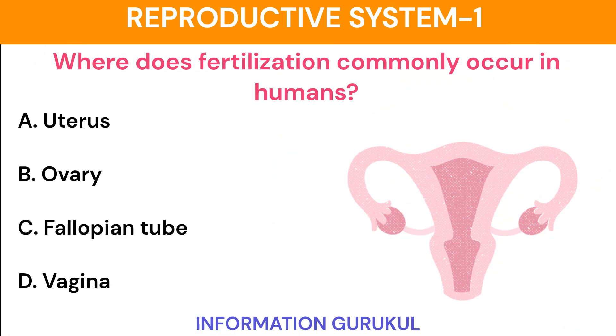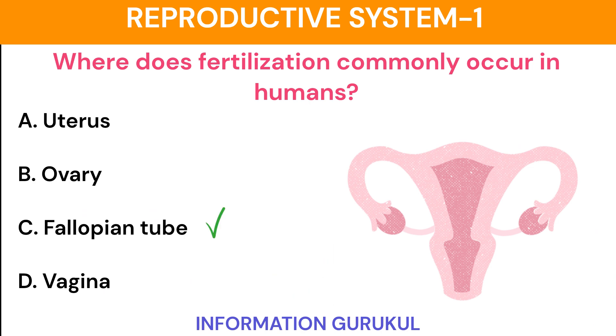Where does fertilization commonly occur in humans? Fallopian tube.